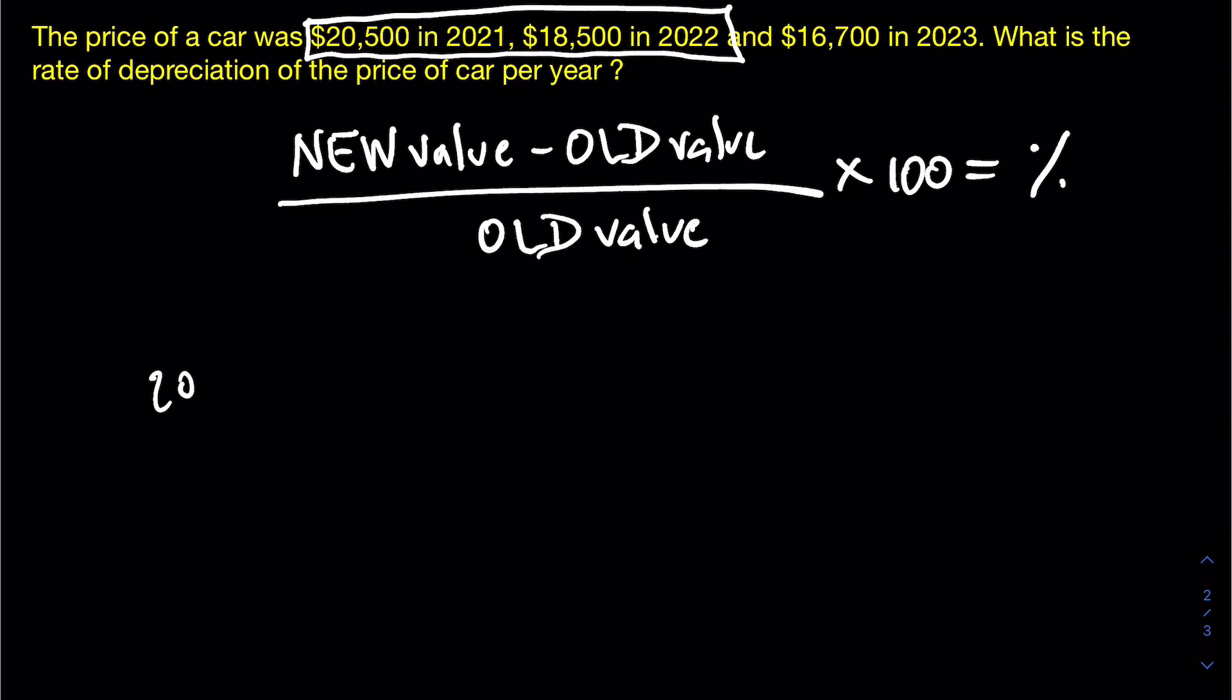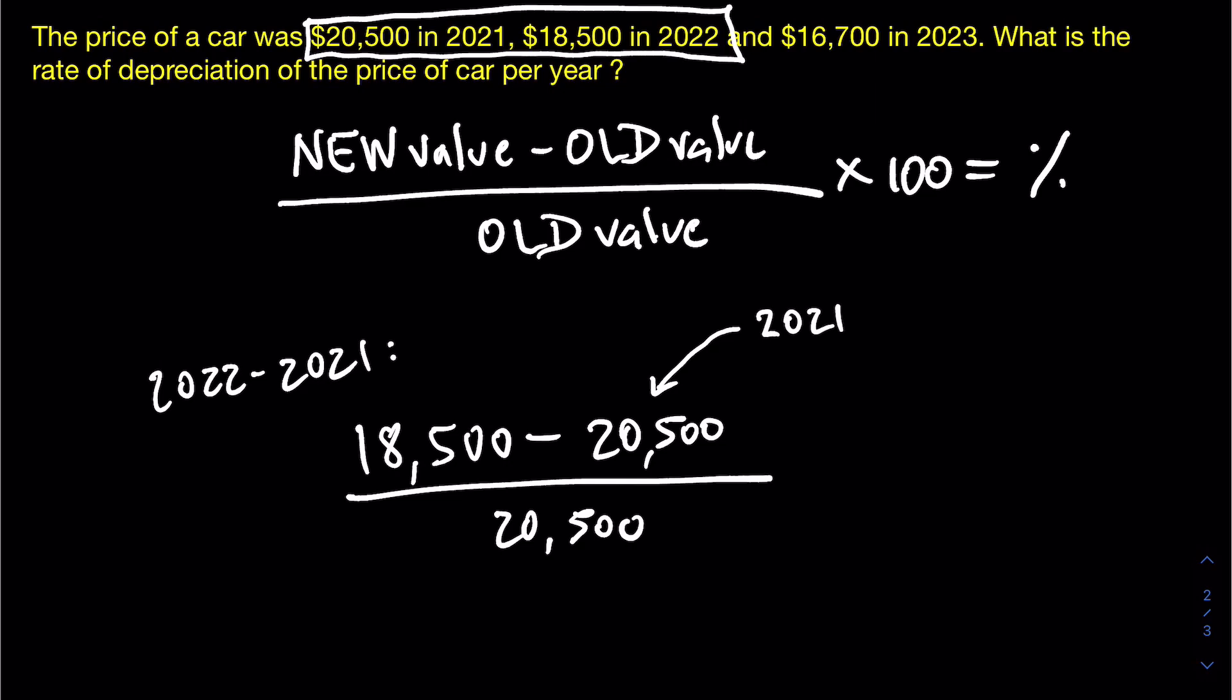And then we would do the same thing for the year 2022 to 2021. So how much value did that car lose in that year? Once again, you repeat the same formula that you see there in the top, just with the specific price for that year. And then you'll see that you get the same answer, you're going to get negative 9.7%.